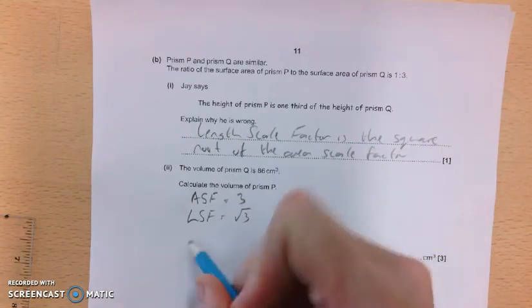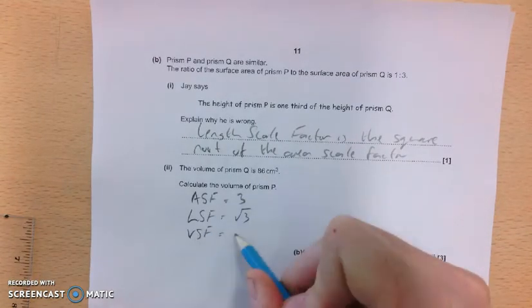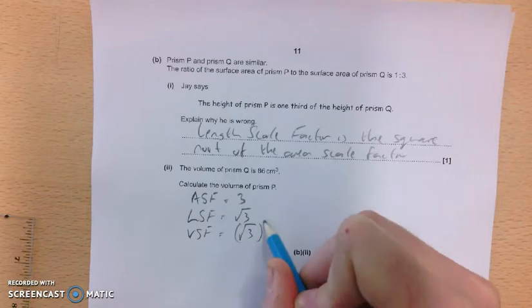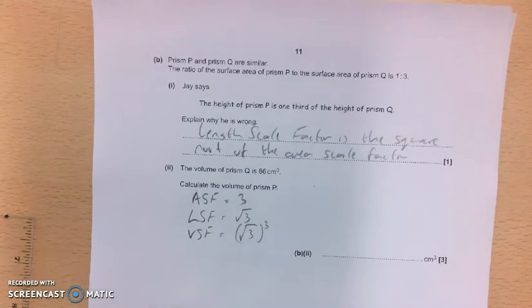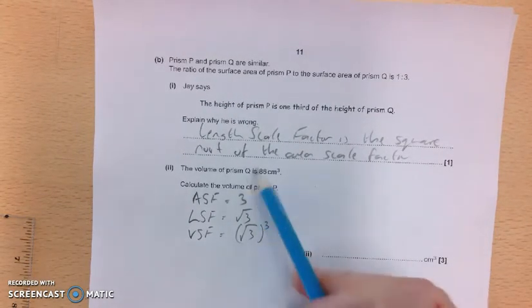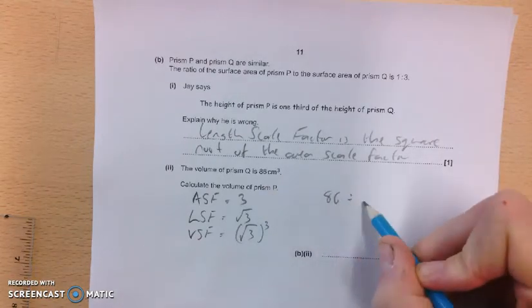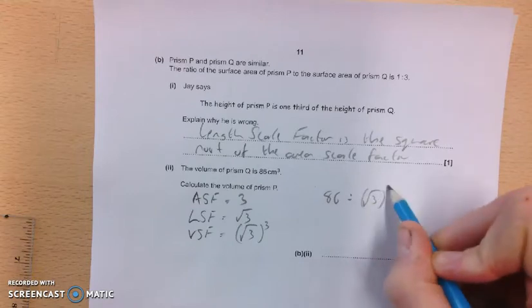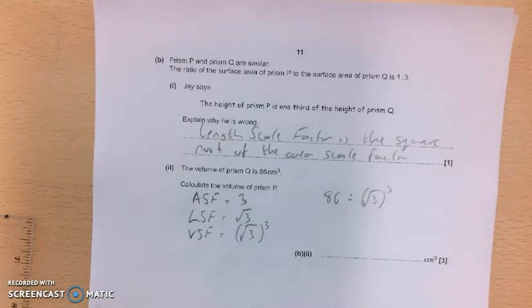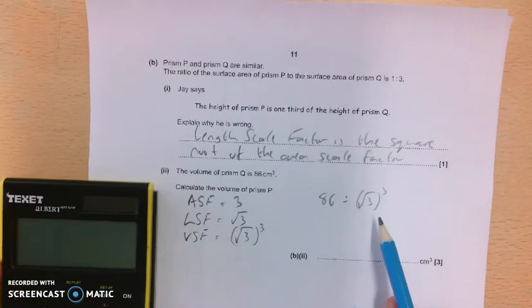And the volume scale factor will be the cube of that. So the cube of the square root of 3. So my 86, that was the bigger volume. So I'm going to get my 86 and I'm going to divide it by the cube of the square root of 3. Because this is my volume scale factor. So I'm going to get my calculator.